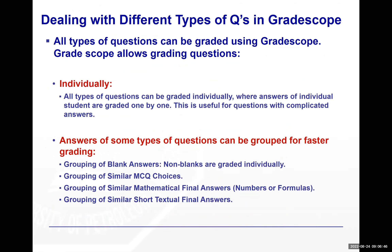GradeScope helps in grading in different ways. You can use it just like grading on paper, where it provides exam sheets one by one. But GradeScope also has AI features that group answers together. For example, with multiple choice questions where students write the letter in a box, GradeScope will group students who selected A together, those who selected B together, and so on. By telling GradeScope that answer A is correct, it will give all students who selected A exactly the same mark.